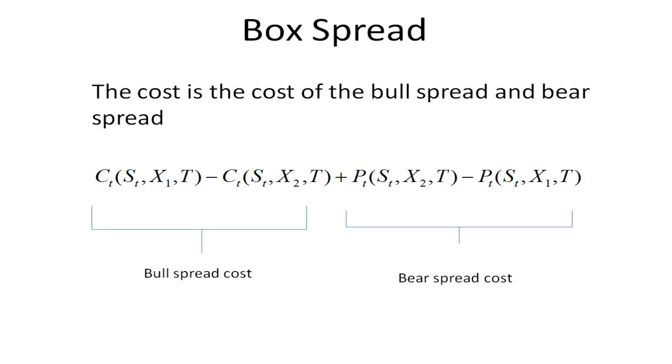What's the cost of the box spread? The cost of the bull spread is the cost of the call option that you purchase with exercise price X1 minus the cost of the call option that you write with exercise price X2, where X2 is greater than X1.